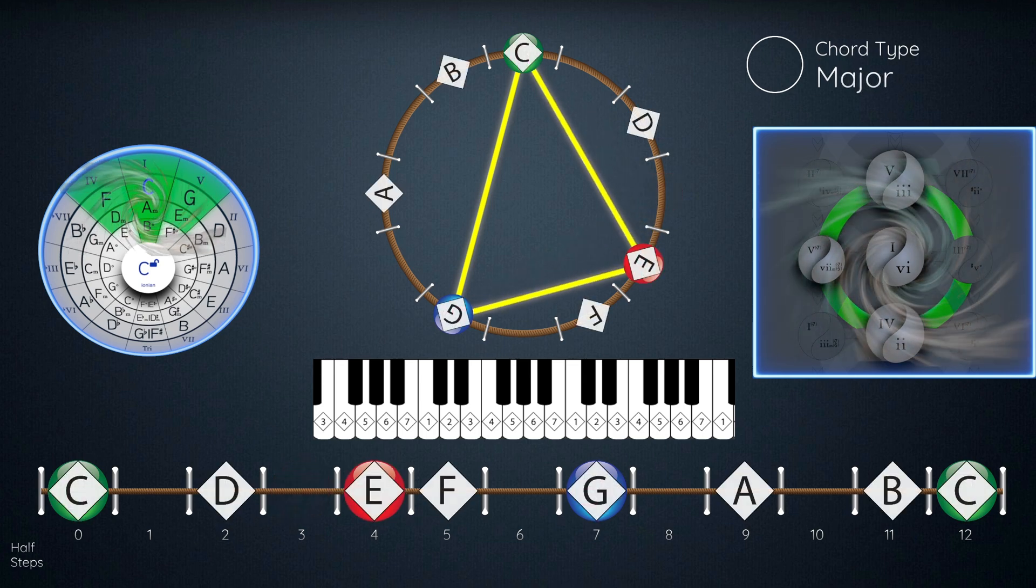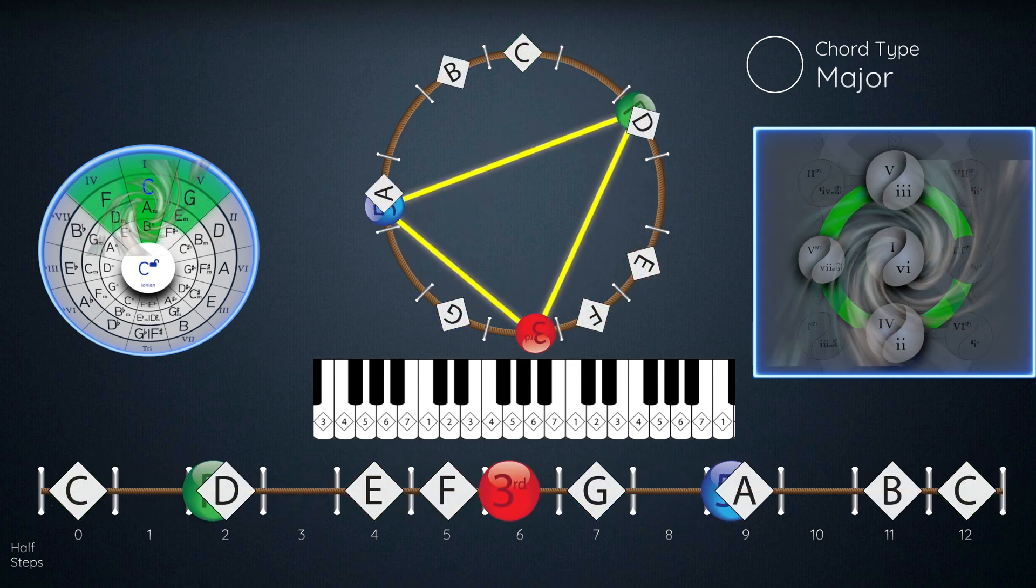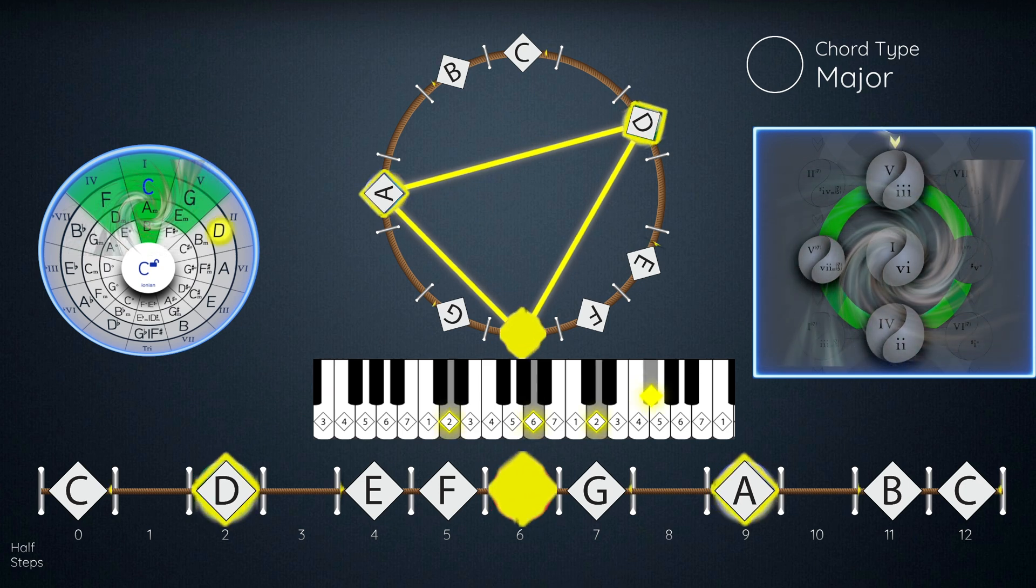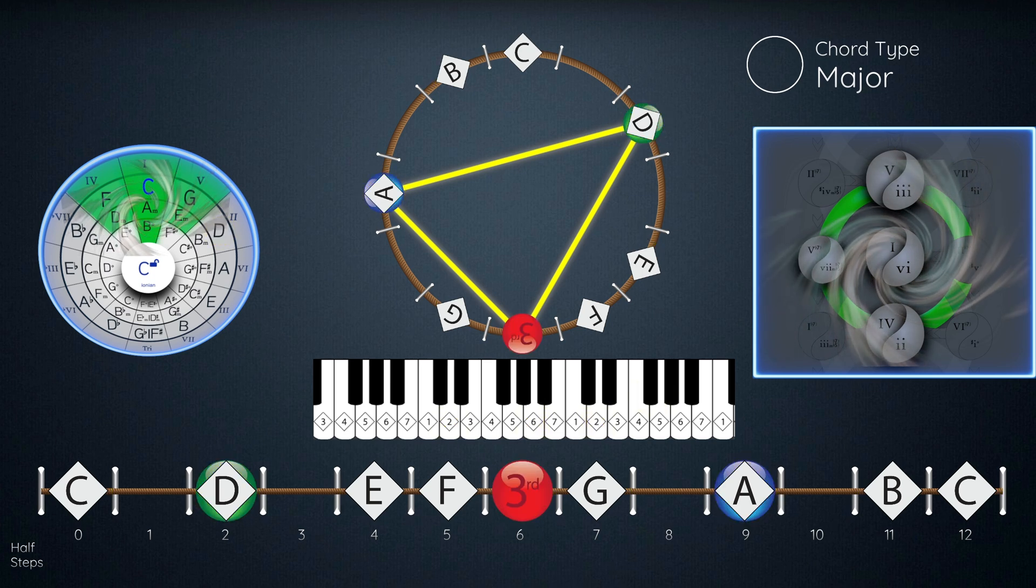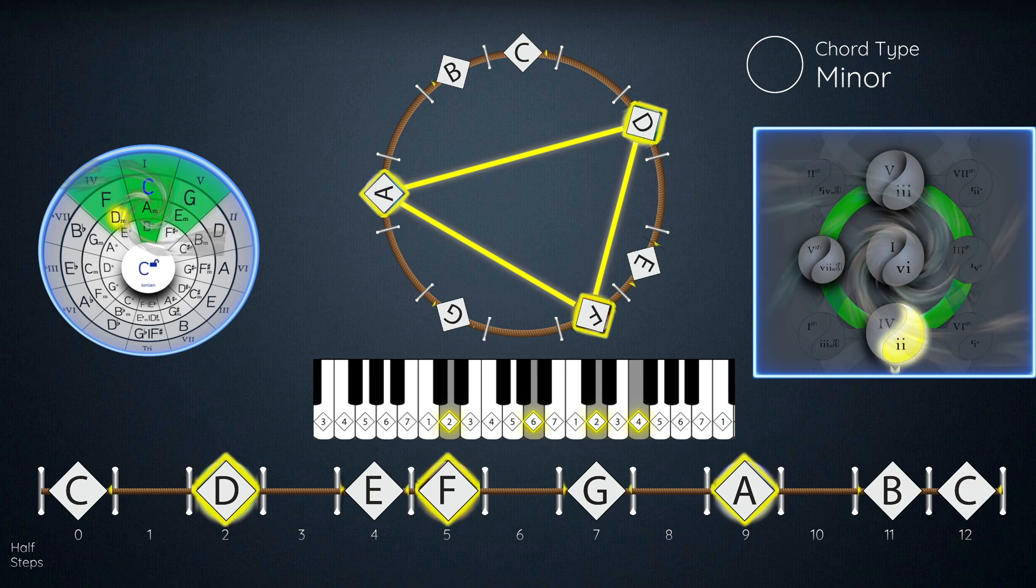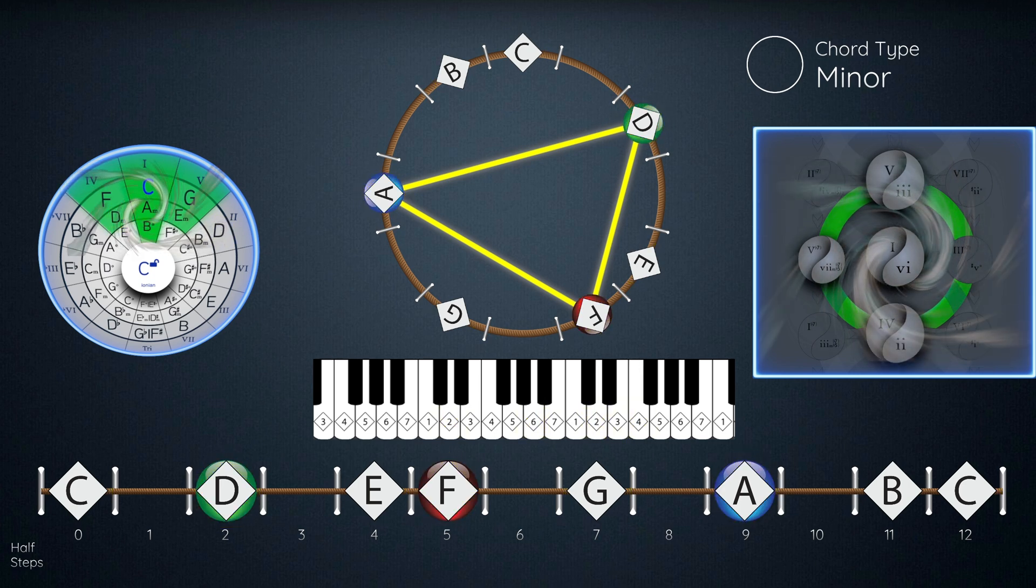I have my C major scale. I turn it over to D, cannot play D major. It just doesn't fit in the scale. I have to bend that chord into a minor, and now I'm safe on the rocks and not in the hot lava.